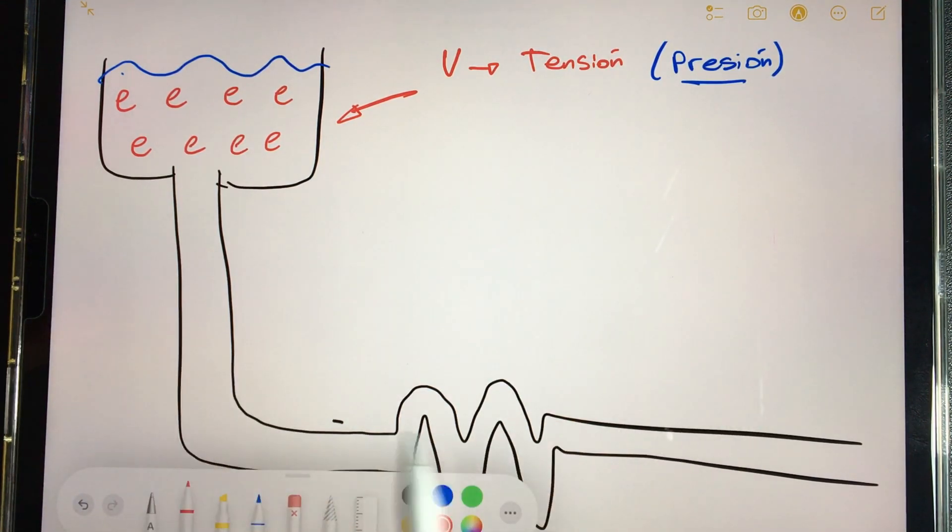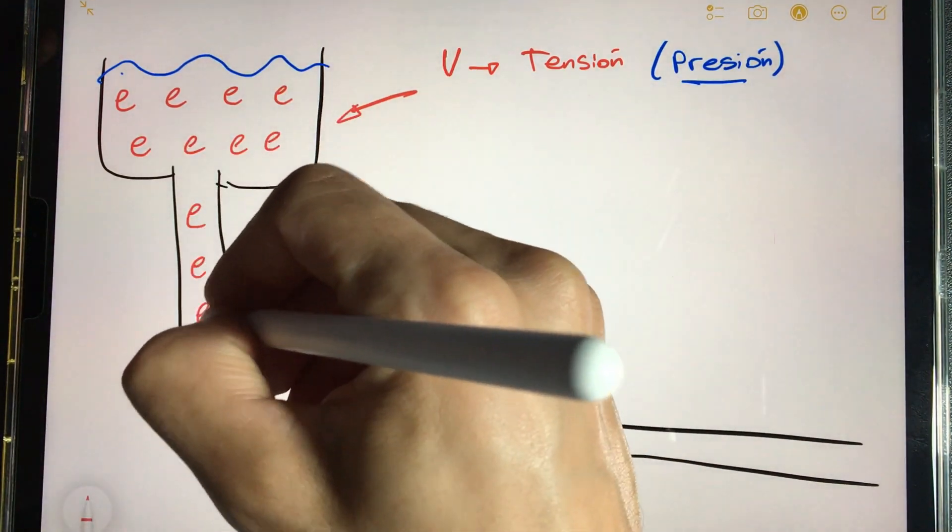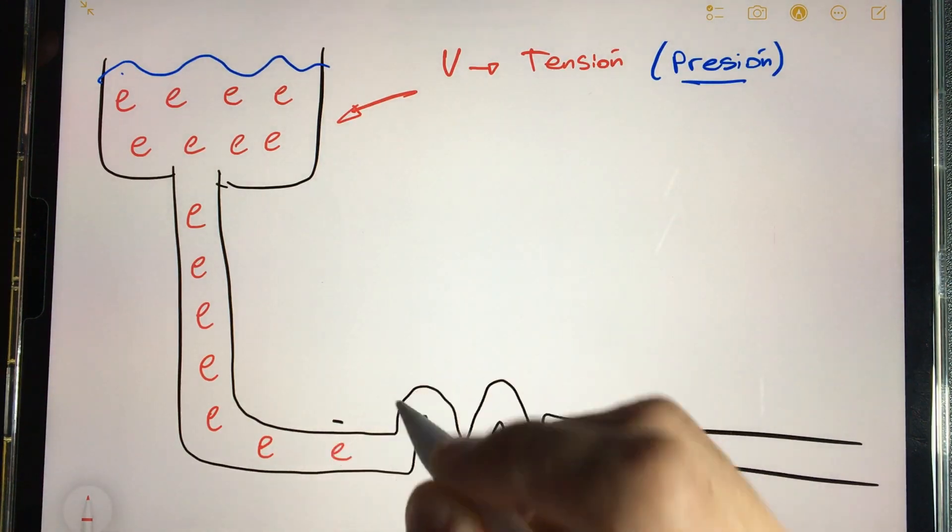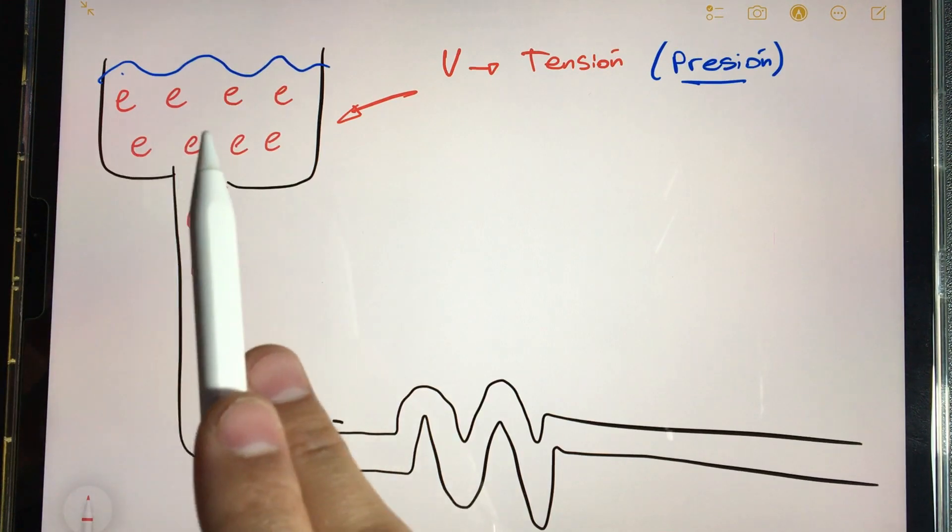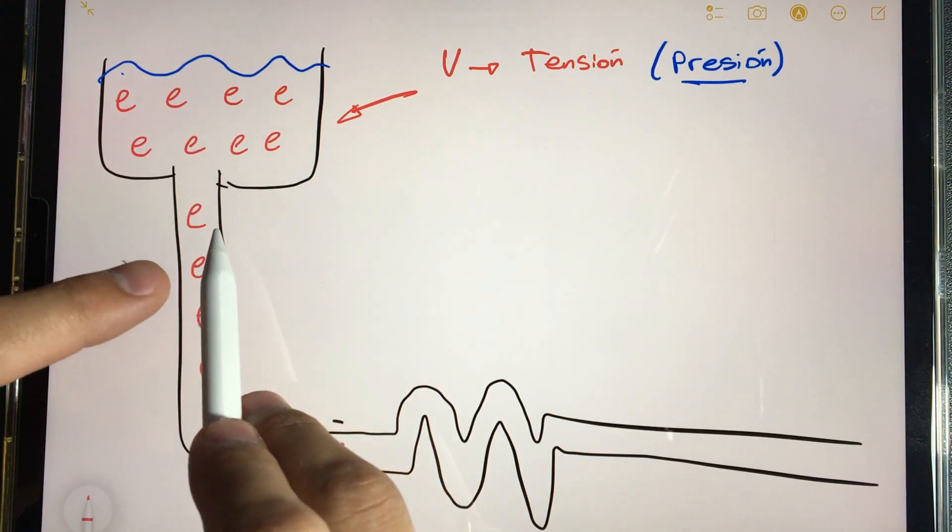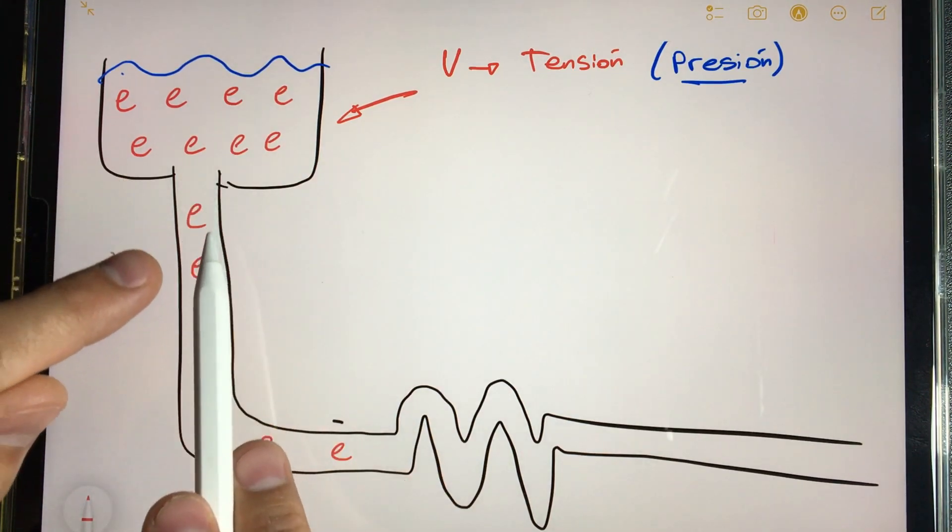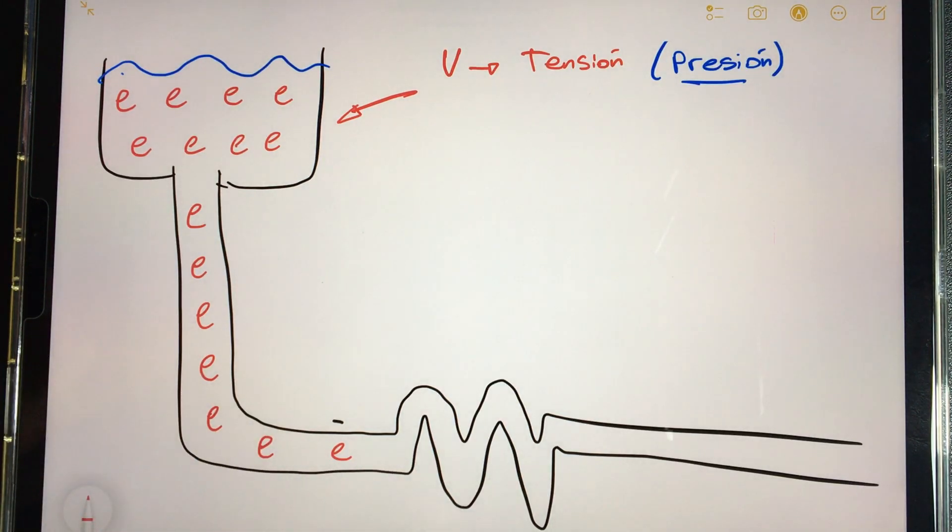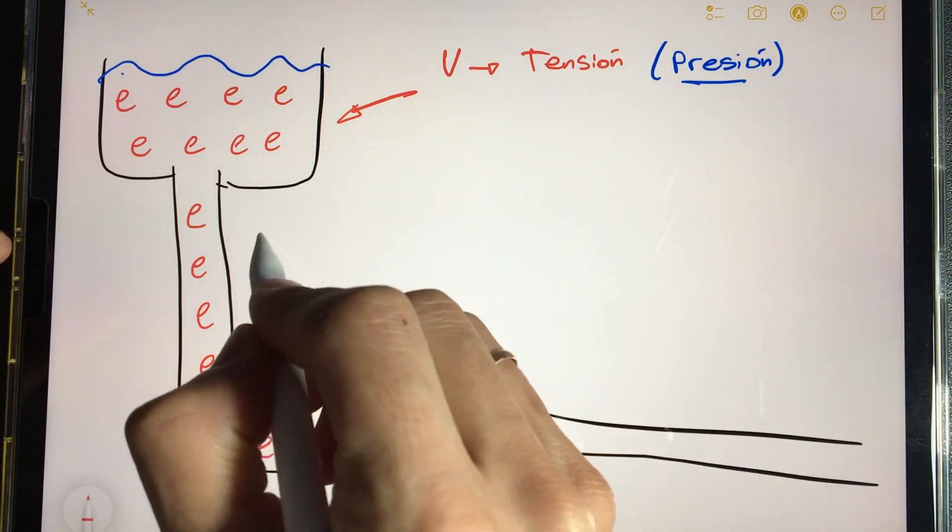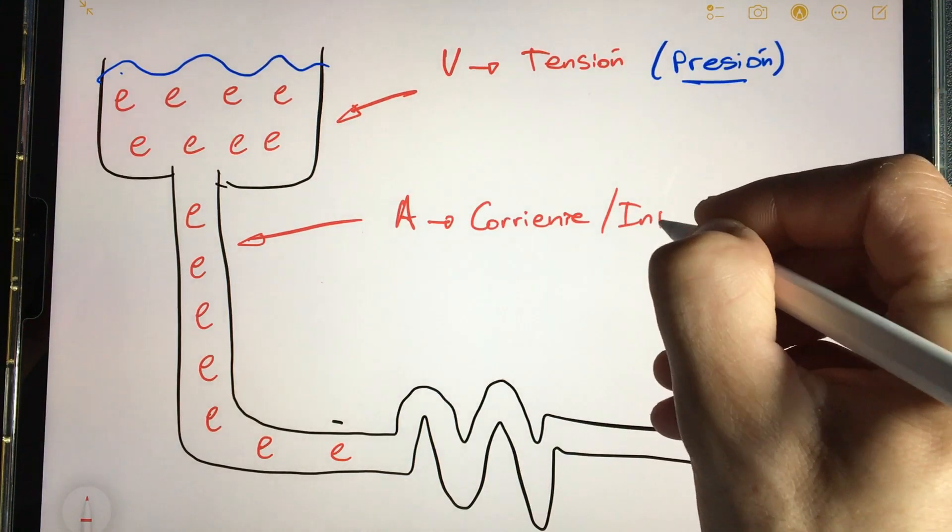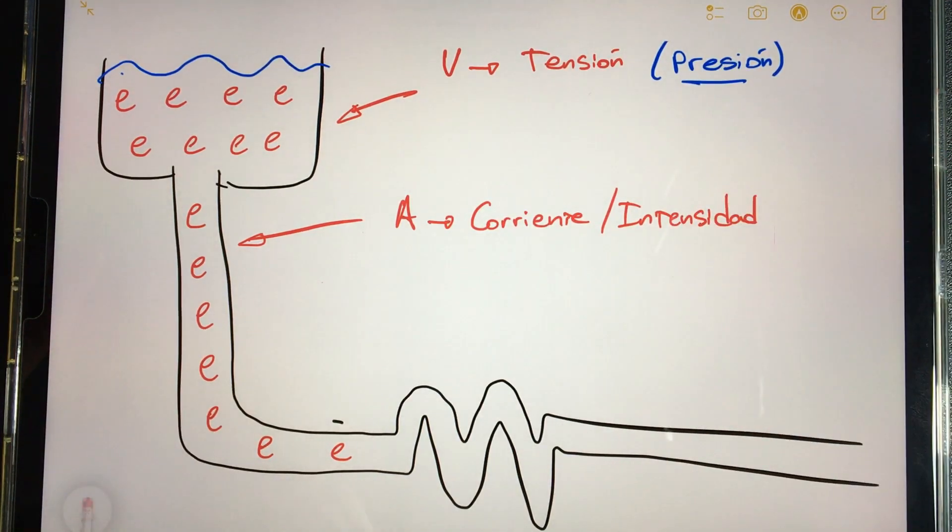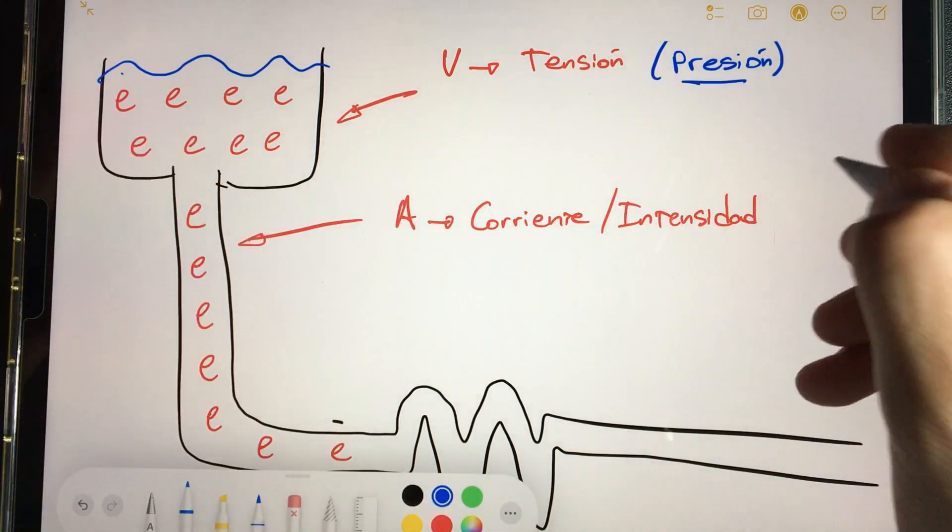If we continue analyzing the circuit, we have more parameters to take into account such as the flow or amount of water or electrons that are going to flow through a conduit. This depends on the voltage but it also depends on the width of the duct. If it is wider, more water will flow. If there is more pressure, more water will circulate. The amount of electrons circulating in a circuit would be in electricity the amperage, the current or intensity. If we compare it to water again, we would be talking about the flow.